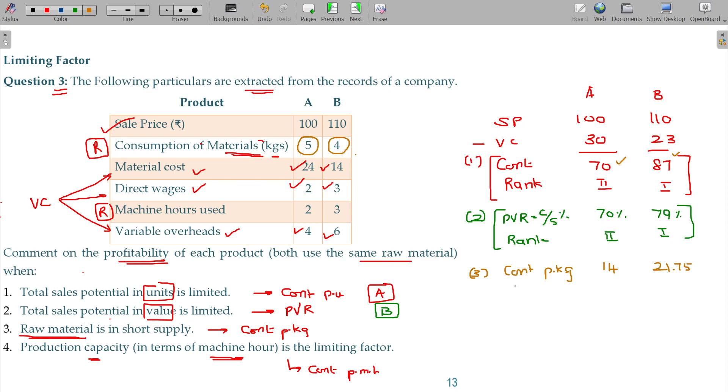When 1 kg of material is used for A or B, which gives better contribution? It's very simple - like an analogy: I know typing and teaching. Typing gives me 10 rupees, teaching gives me 1000 rupees. What should I do? Obviously choose the better option.